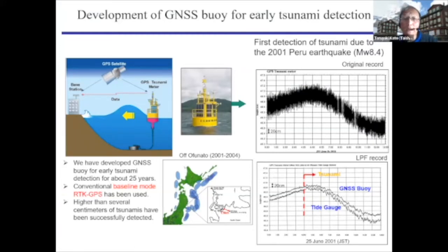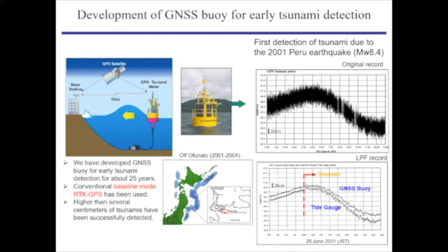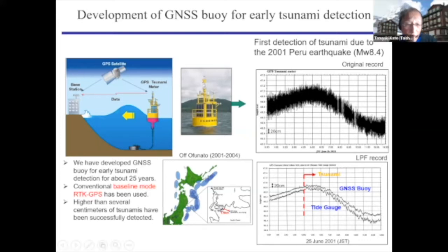My colleagues and I have developed GNSS buoy data for more than 25 years. The first tsunami was detected by GNSS buoy in 2001. That was from the Peru earthquake, and we detected the tsunami at the buoy placed at Ofunato city, which is in the northeastern part of Japan.